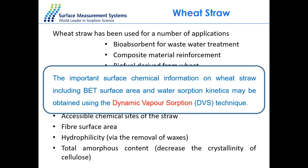One thing we can analyze using DVS is measuring the specific water absorption capacity, but also the total surface area of the material using BET surface area analysis. We have different solvents available, and the choice depends on the relationship between the solvent and the material. I cannot simply pre-pick a solvent — some materials will have specific sorption capacity that allows the use of water to measure BET surface area.